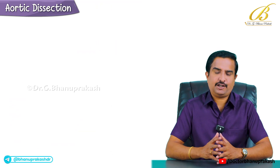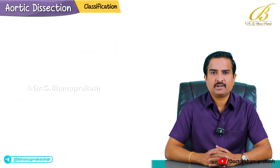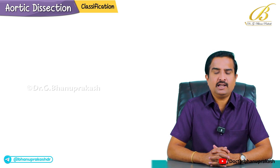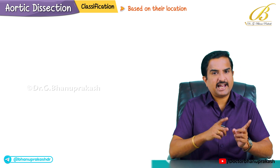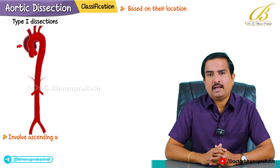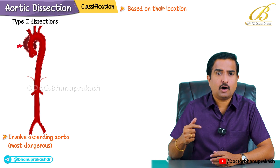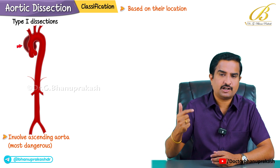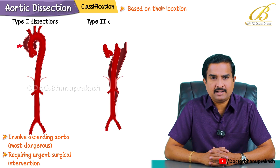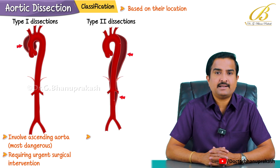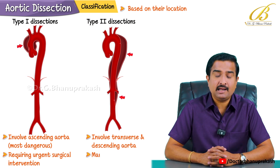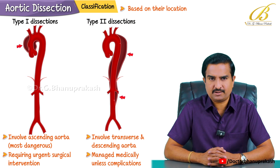Aortic dissections are classified based on their location. Type 1 dissections involve the ascending aorta and are most dangerous, often requiring urgent surgical intervention. Type 2 dissections involve the transverse and descending aorta and are typically managed medically unless complications arise.